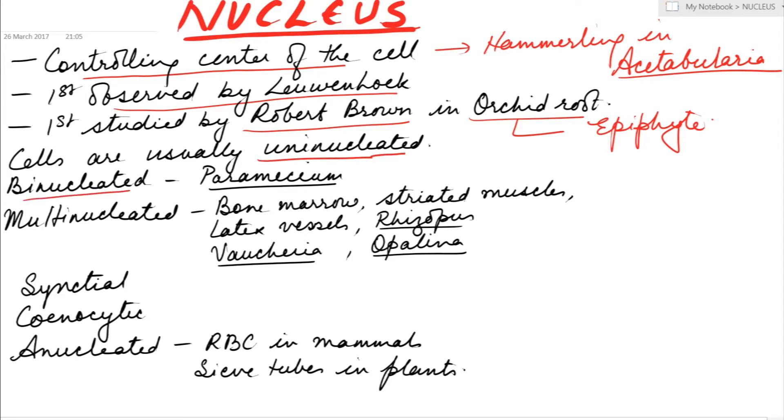Binucleated or two nuclei can be seen in paramecium. Multinucleated condition is seen in cells of bone marrow, striated muscles, latex vessels, rhizopus (fungi), valkyria (algae), and opalina (protozoan).